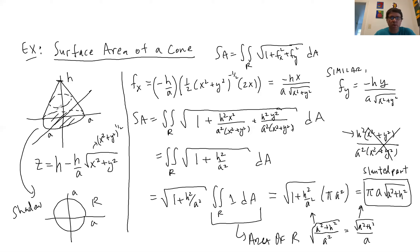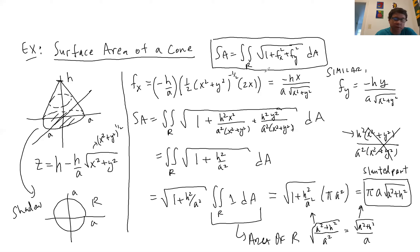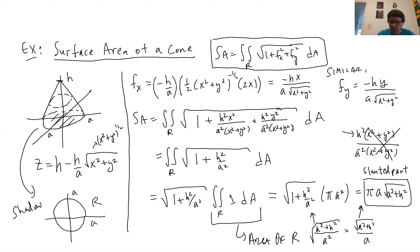These types of problems come down to: can you use the surface area formula properly? Can you find the derivatives correctly, plug them in, do the algebra, and then figure out the correct parameterization — whether it's Cartesian x and y, or if it's a circle and you'd rather do polar?